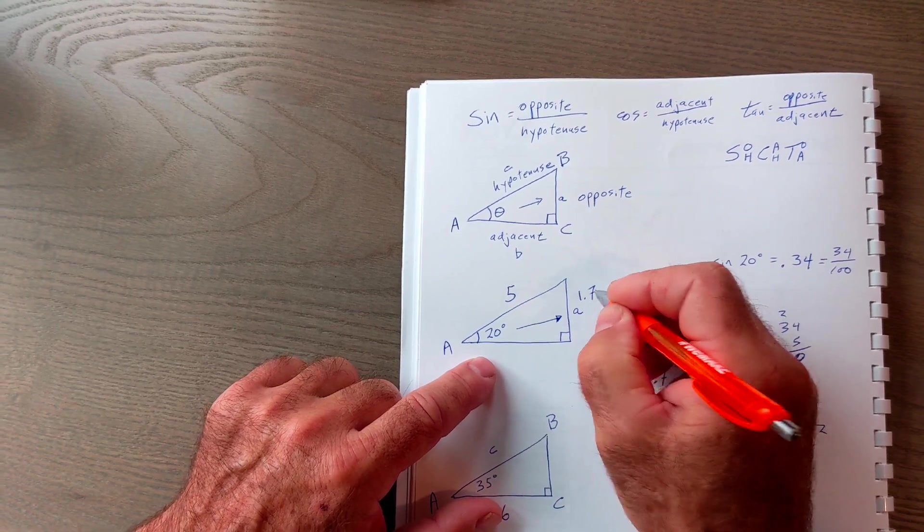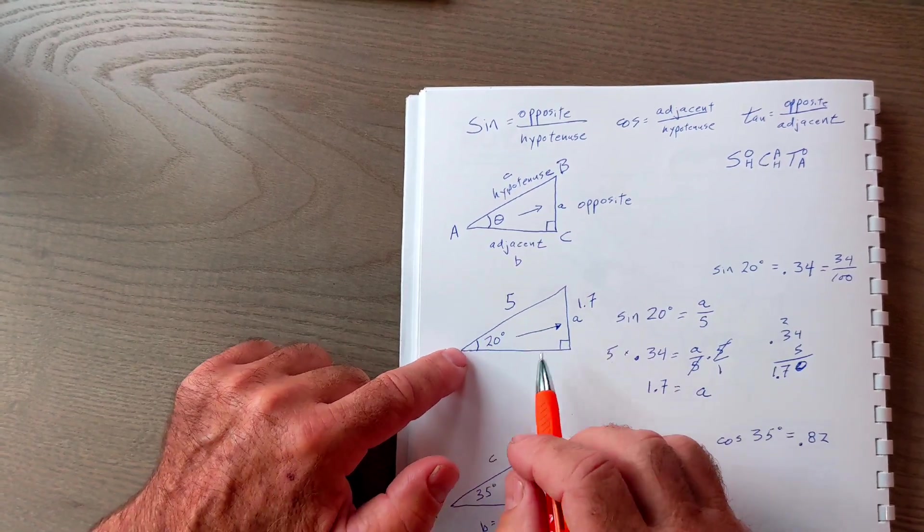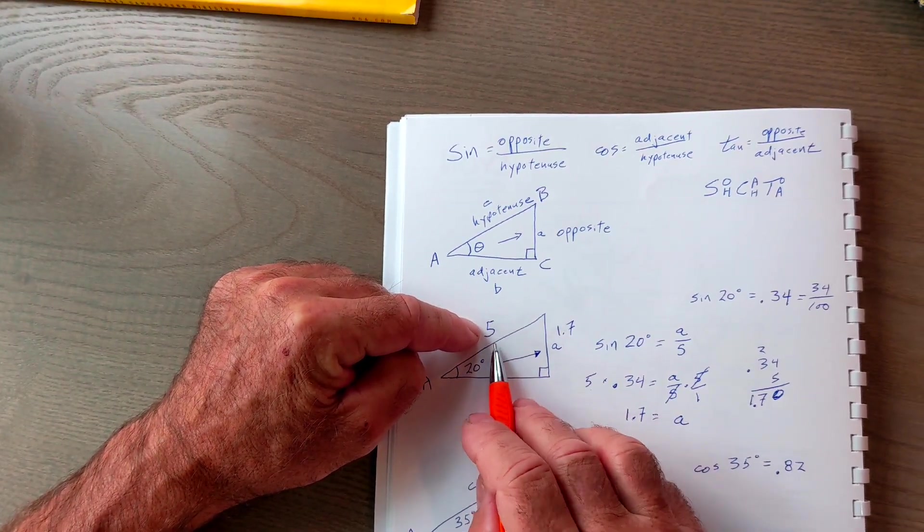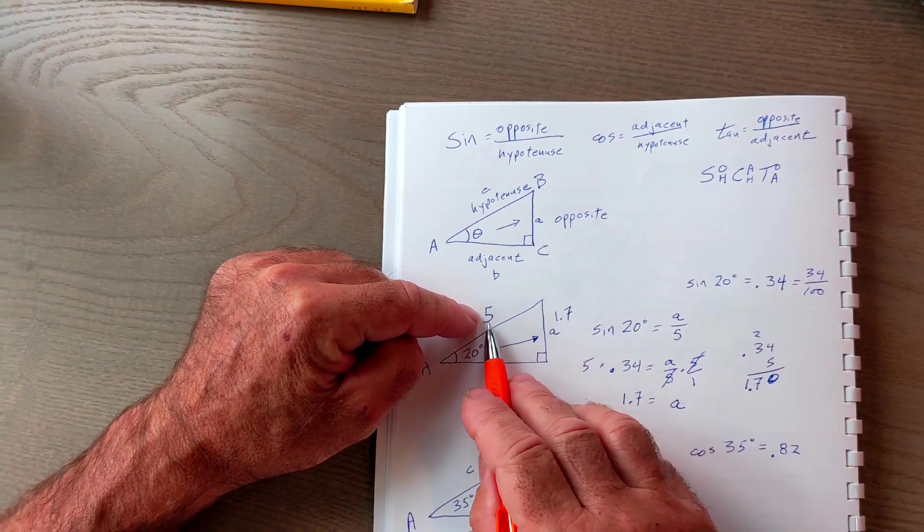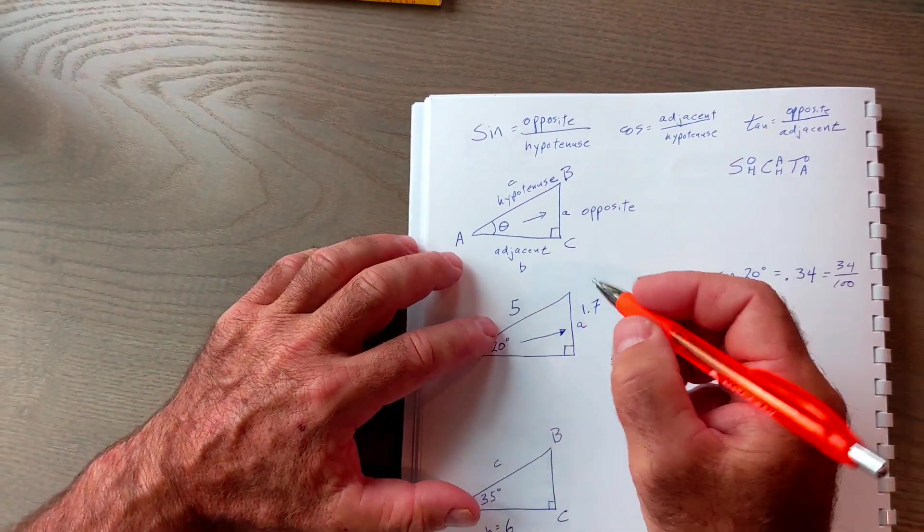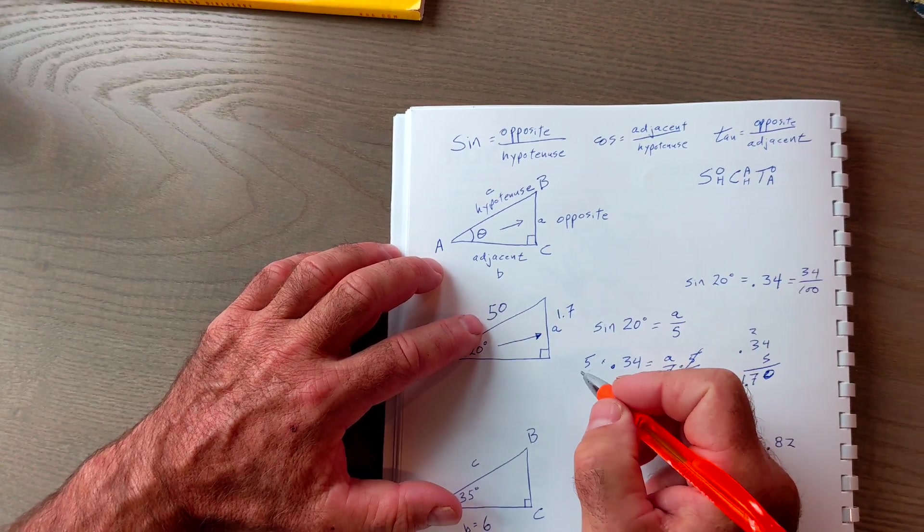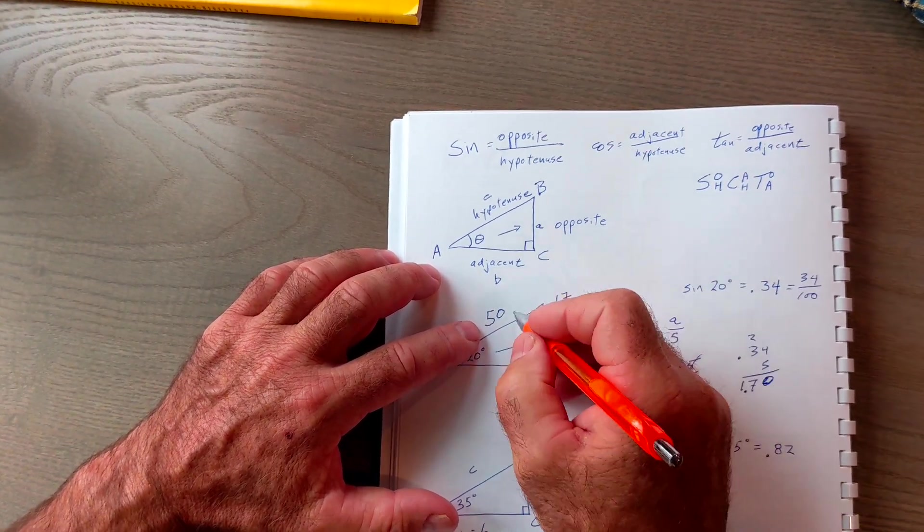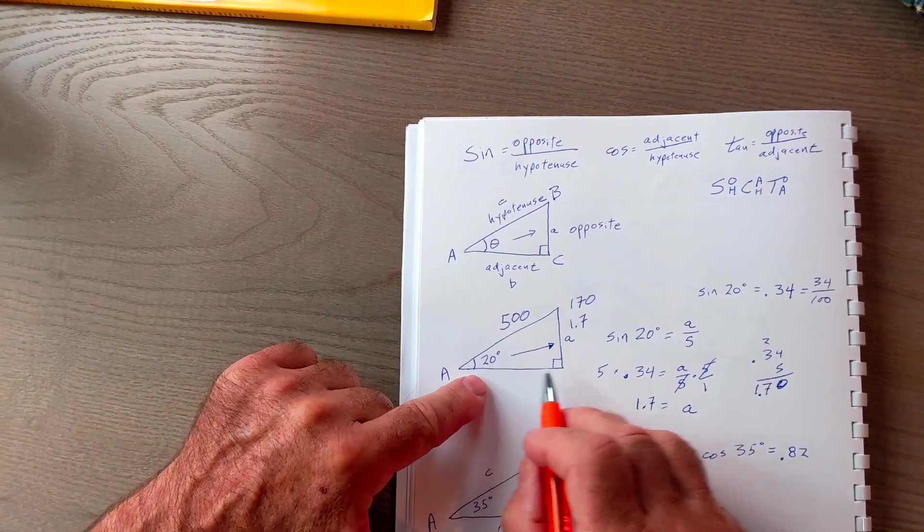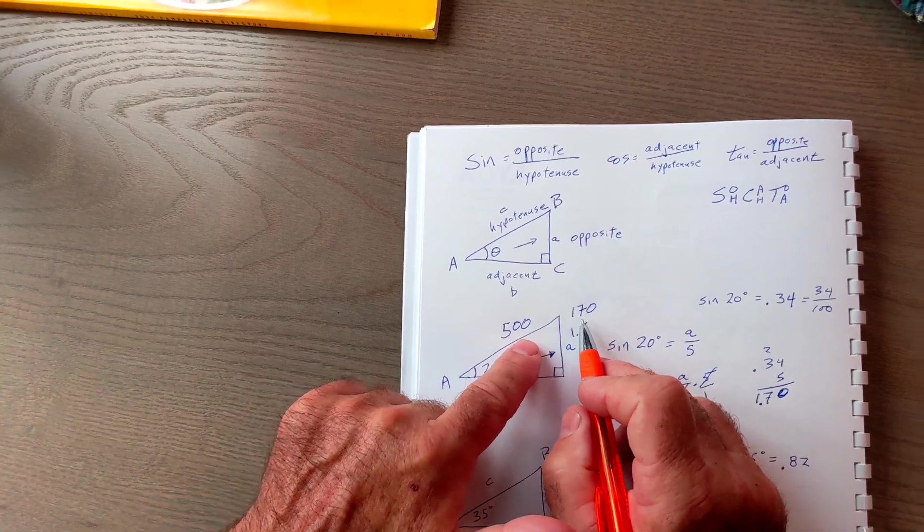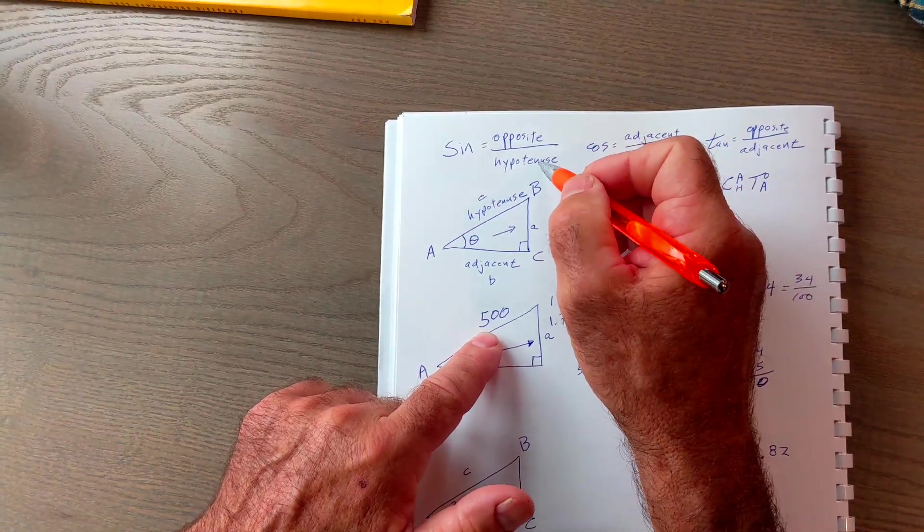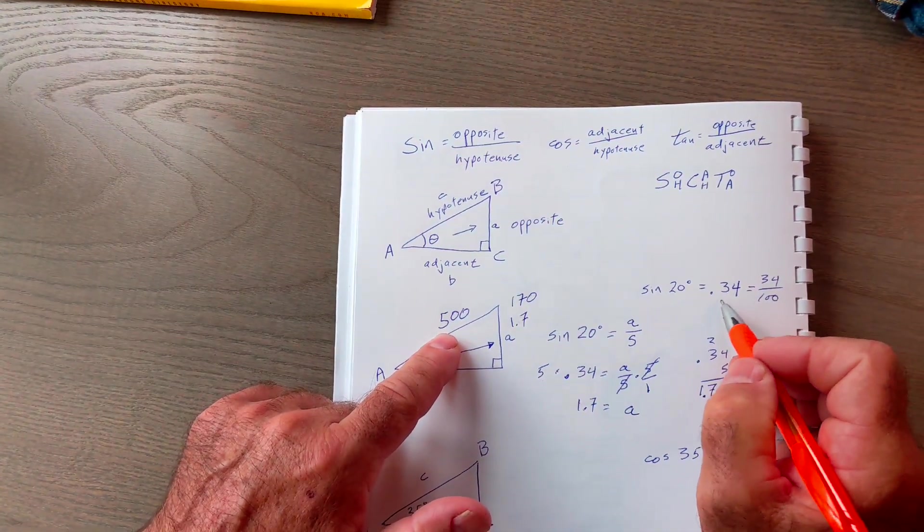This side, side A, is 1.7 units long. So in a triangle where this is 20 degrees and this is 5, the ratio of the opposite to the hypotenuse is 0.34. 1.7 divided by 5 is the same thing as 0.34. If this triangle was really big and this were 10 times larger, like 50, then this would be 17. If this were 500, this would be 170. As long as that angle stayed the same, or we're talking about right triangles, that ratio has to stay the same. 170 divided by 500 is the opposite divided by the hypotenuse, and it's going to be the same ratio of 0.34.